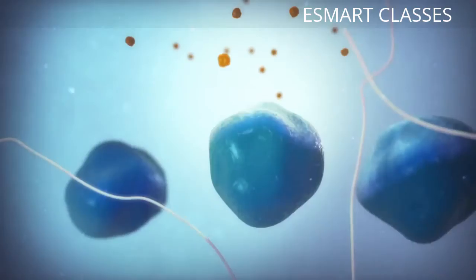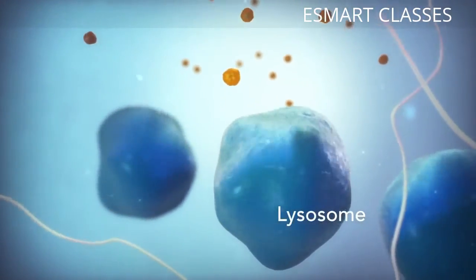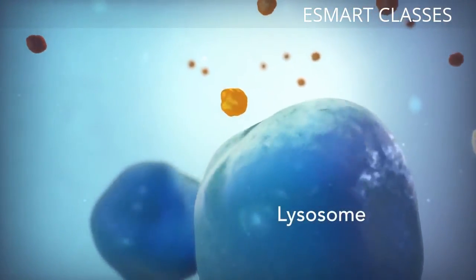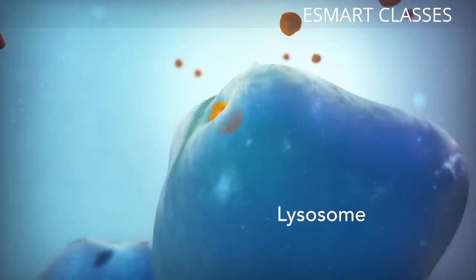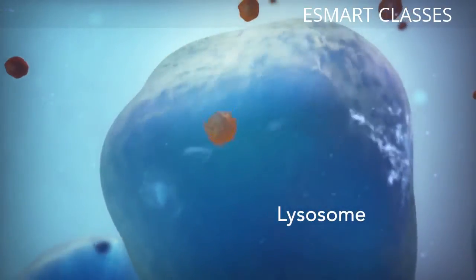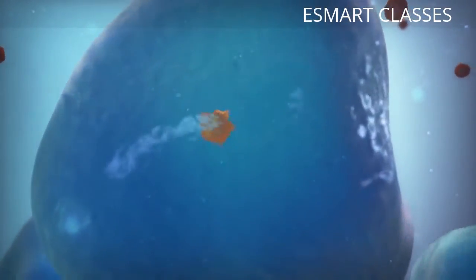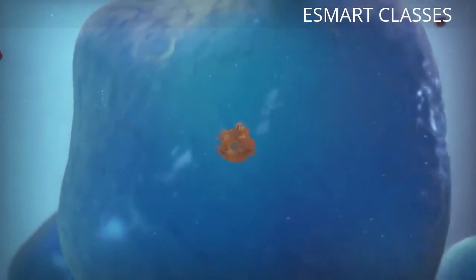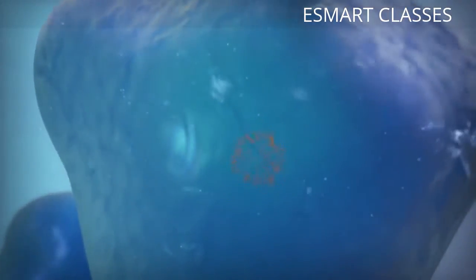Going back to the animal cell, you will see an organelle called a lysosome. Lysosomes are the garbage collectors that take in damaged or worn-out cell parts. They are filled with enzymes that break down this cellular debris.